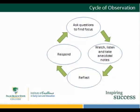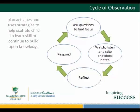Respond. The next step in the cycle is to respond. If, during reflection, she determines that Joel cannot write a J, the teacher then plans activities and uses strategies to help scaffold him through learning this skill. Or, if the teacher finds out Joel can write a J, she might plan activities and use strategies to help him begin to learn additional letters.